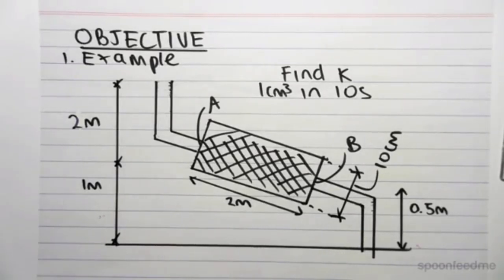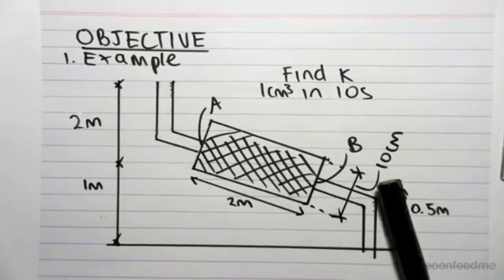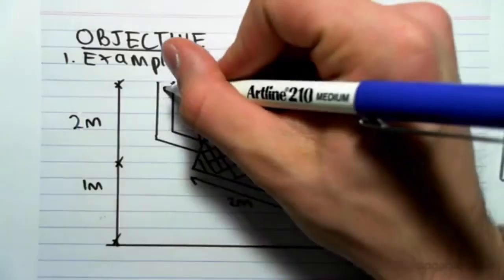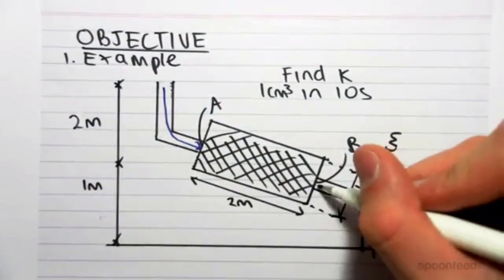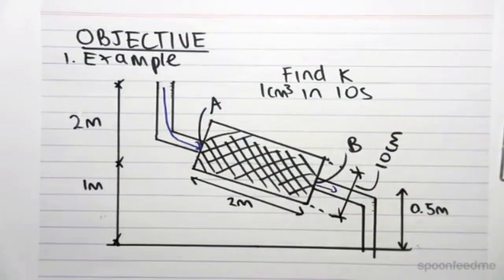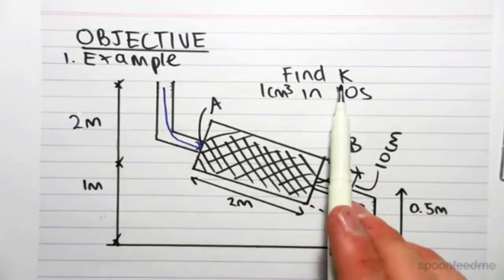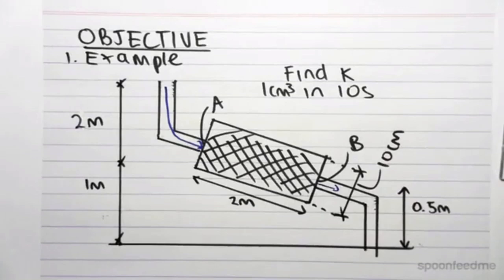In this question, this is a contraption, maybe something like it's set up in a lab. You're going to have water flowing through these tubes, through this sample of soil, and out the other end. We're going to be using this contraption to be able to find k, the coefficient of proportionality of this soil.